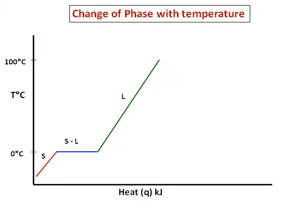Once all the solid ice is converted into liquid, the temperature starts rising again, represented by the green line — this is the liquid phase. The temperature keeps increasing as you heat it. Once it reaches 100 degrees Celsius, the purple line becomes flat again. This is the point where liquid becomes gas, and since there is a phase transition, delta T equals zero — no change in temperature even though I'm supplying heat. Once all the liquid is converted into gas, temperature rises again, shown by the orange line. So we have five parts in this graph: solid, solid to liquid, liquid, liquid to gas, and gas.